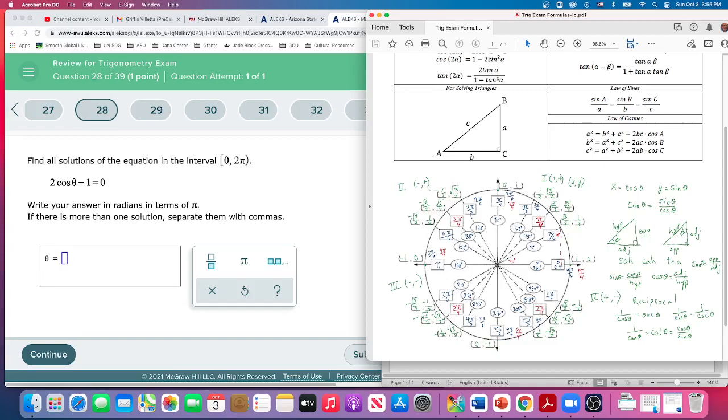But we keep going around. Where's another place x is 1 half? Well, right over here. But over here, it's a negative 1 half. So that doesn't count. We keep coming around. There's a negative, another negative 1 half. That doesn't count.